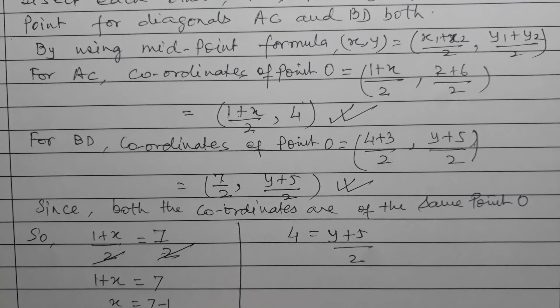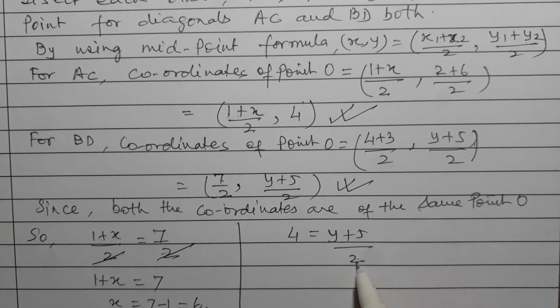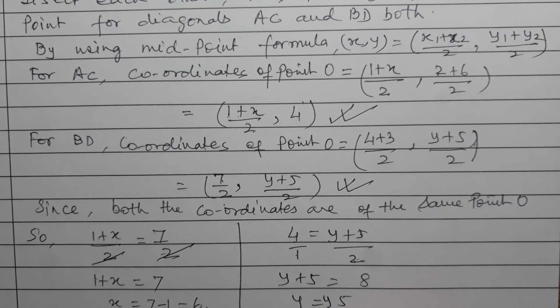In this equation, both are equal so we can cancel the 2 on both sides. So 1+x = 7, therefore x = 7-1 = 6. Now coming to this side, when we multiply 2 with 4 we get 8, so y+5 = 4×2 = 8, therefore y = 8-5 = 3.